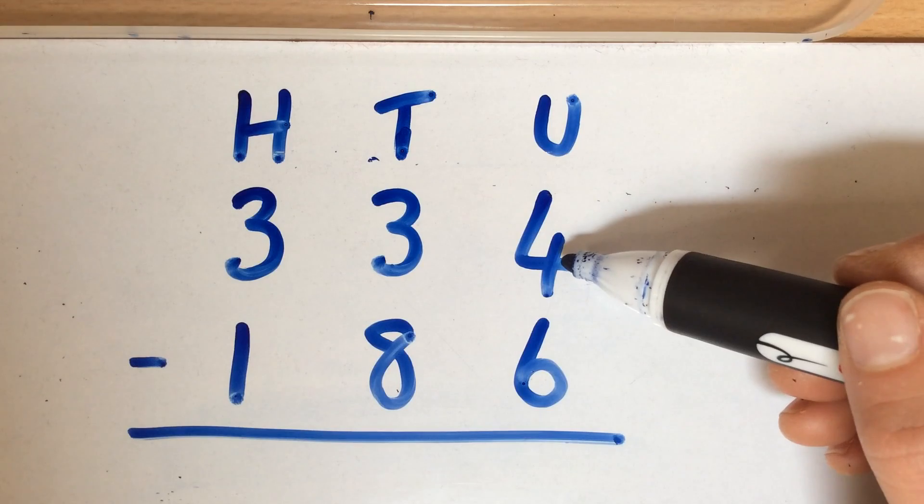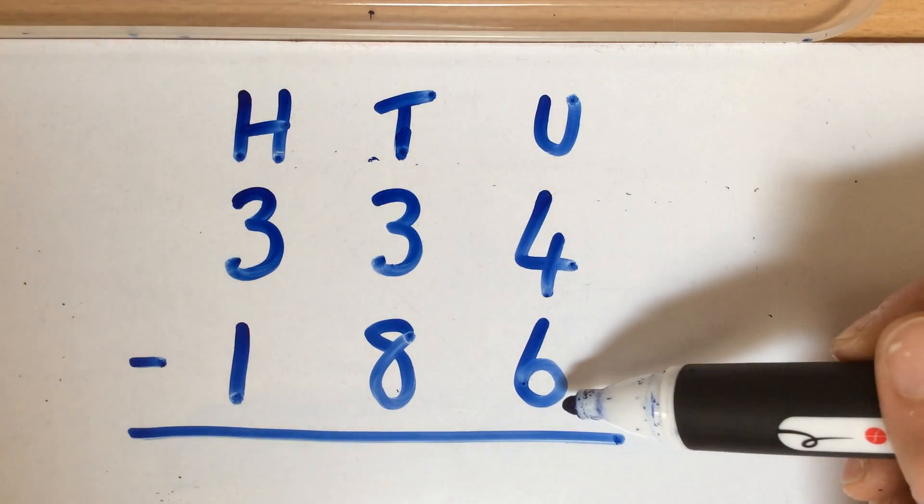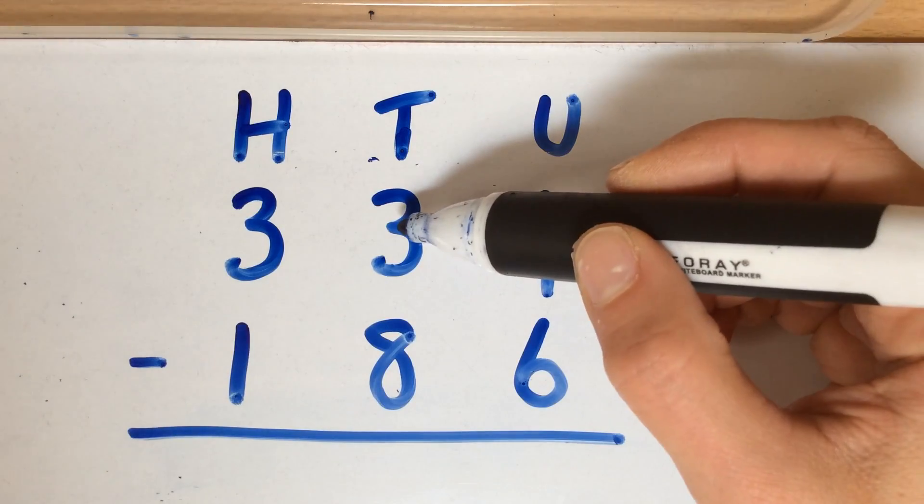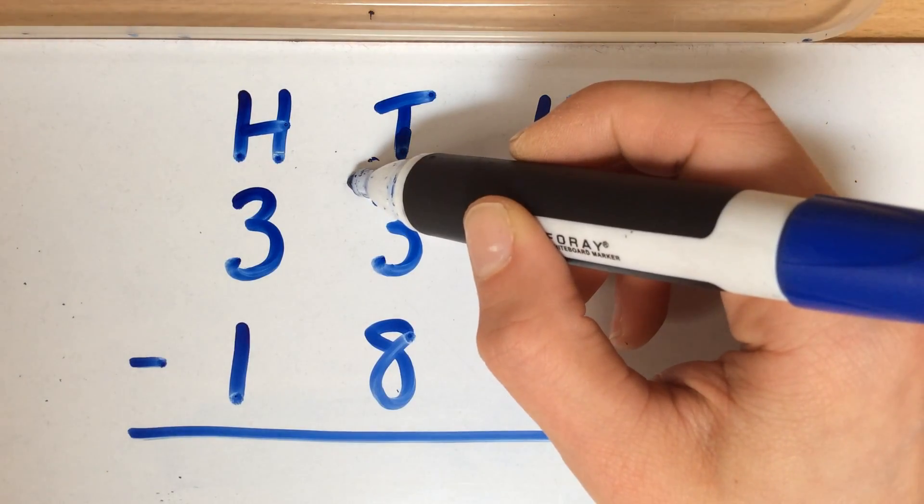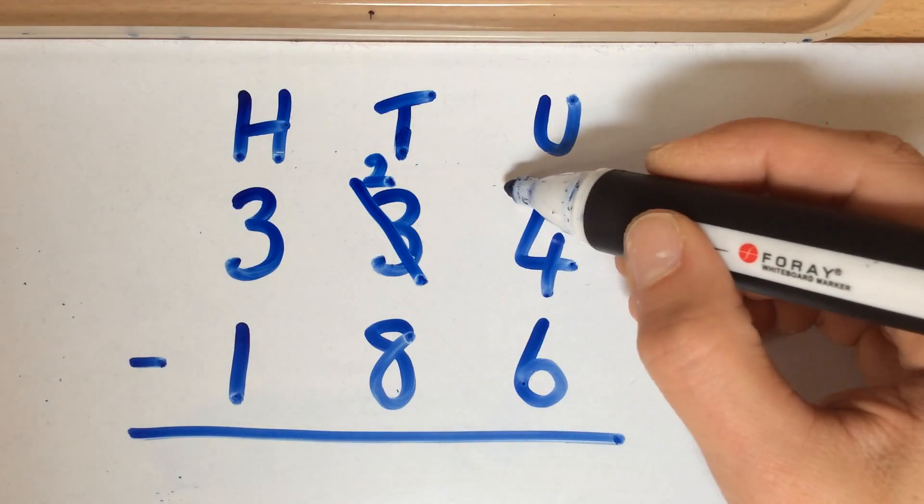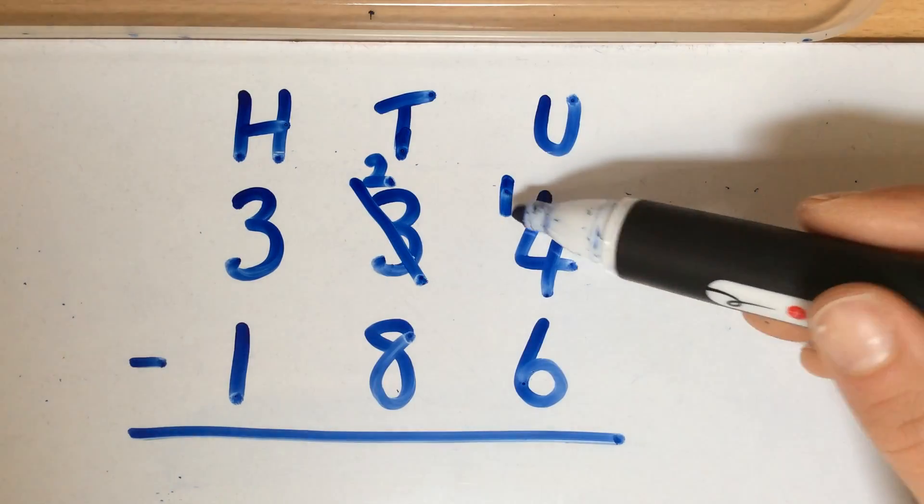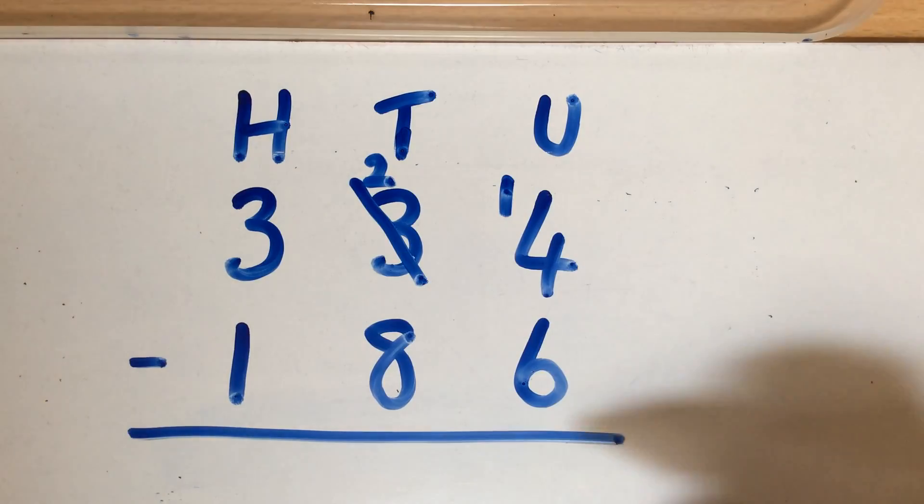We've then got 4 take away 6, not 6 take away 4, 4 take away 6. So we can't do 4 take away 6, which means we've got to borrow another 10. So we're crossing out our 3 and putting a 2. The extra 10 comes back to the units, so now we've got 14 take away 6, which is 8.